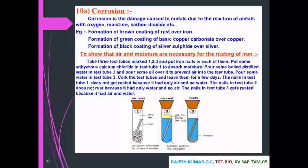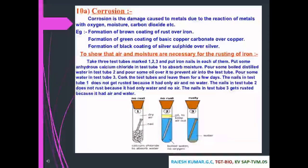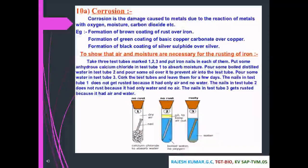Corrosion is damage caused to metals due to their reaction with oxygen, moisture, carbon dioxide, etc. Examples include: formation of a brown coating of rust over iron, formation of a green coating of basic copper carbonate over copper, and formation of a black coating of silver sulfide over silver.